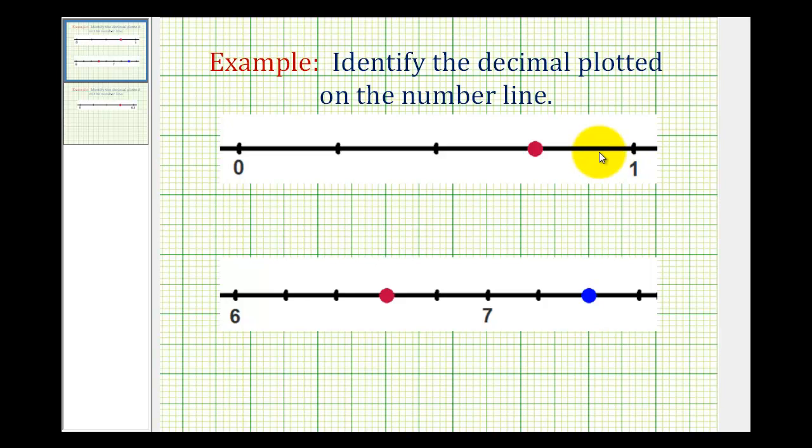So from zero to one, this is divided into one, two, three, four pieces, which means each of these would be one-fourth.